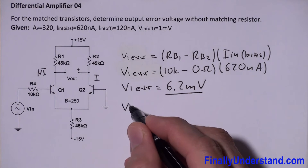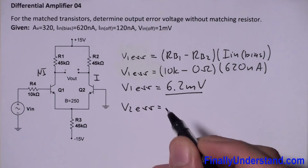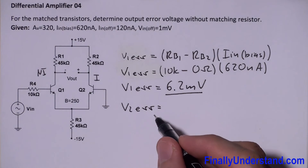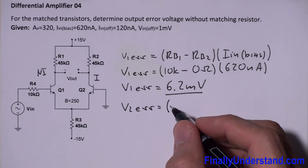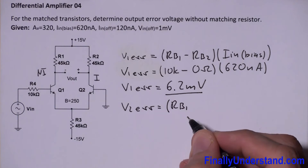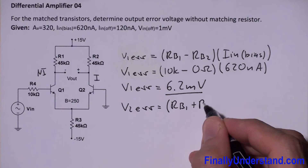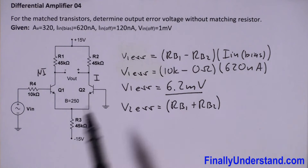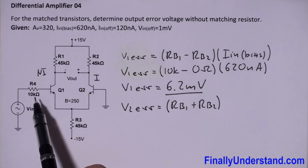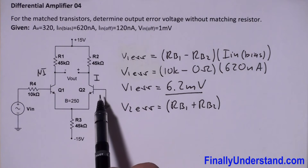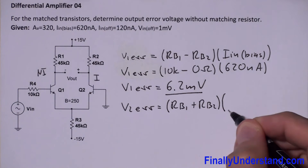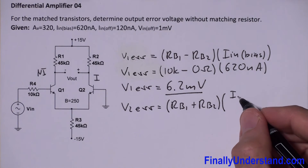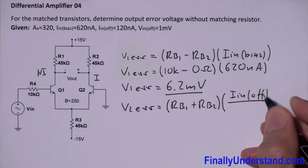Next, I need to find V2_error — the input error voltage due to the input offset current. The formula is: V2_error = (Rb1 + Rb2) × input offset current divided by two, where Rb1 is the resistor connected to base 1 and Rb2 is the resistance connected to the base of transistor Q2.